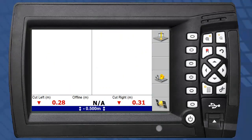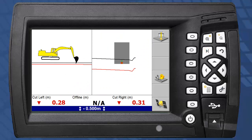Tabbing to the cross section or profile view will show the original design surface as a black profile, and the offset surface as a red profile. Cut and fill values now relate to this offset surface.